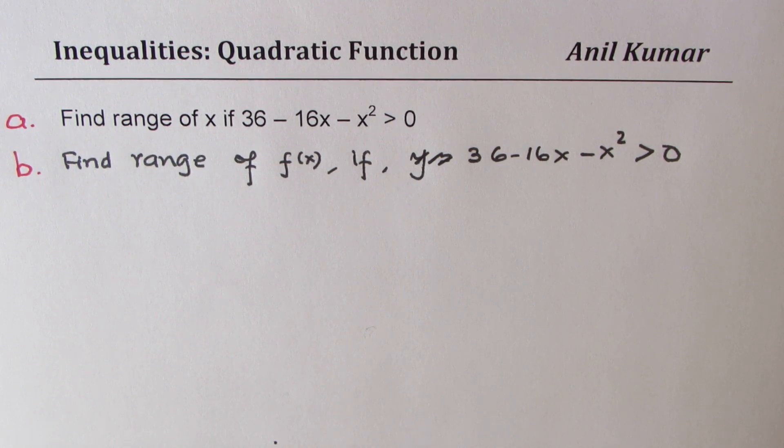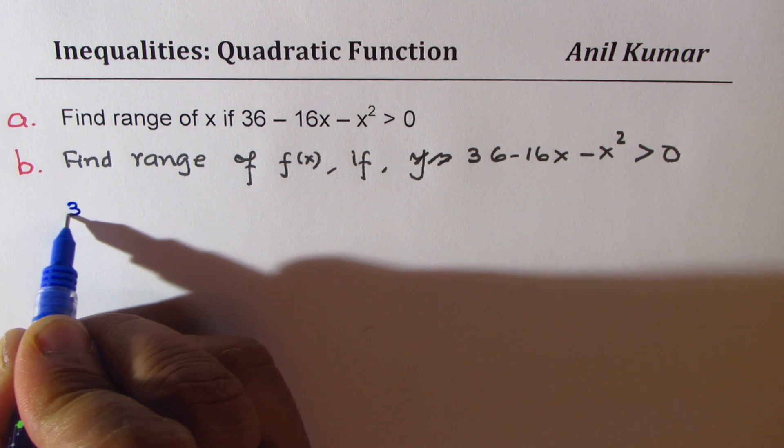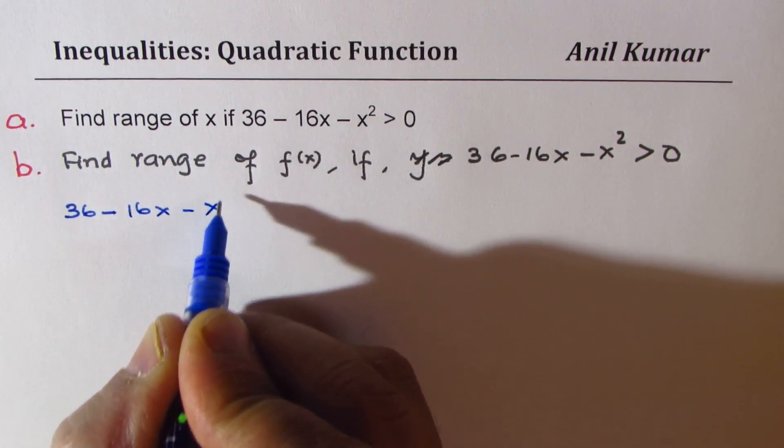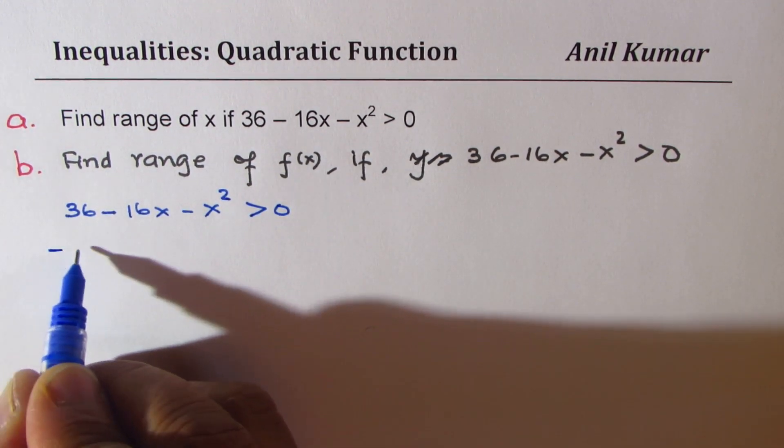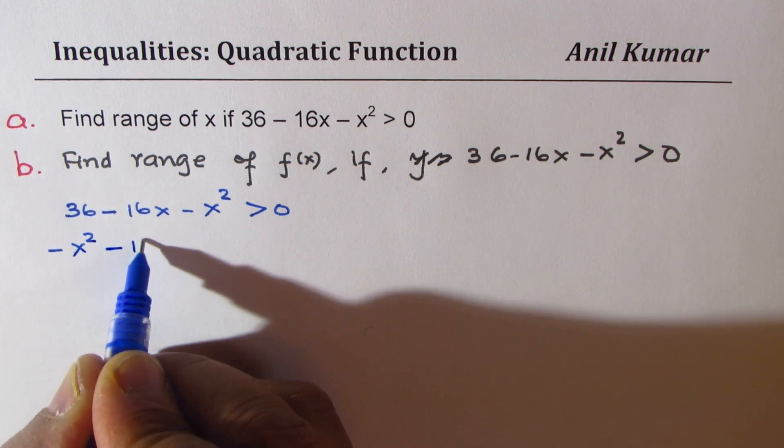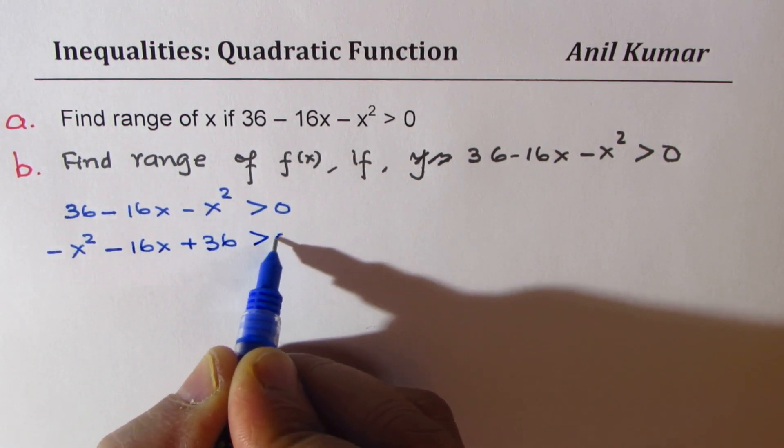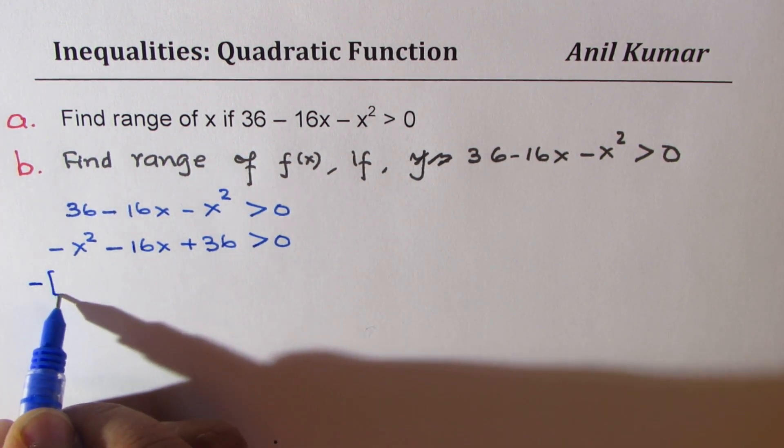Let's begin with the solution. The equation before us is 36 minus 16x minus x squared is greater than 0. Let's rearrange. We get minus x squared minus 16x plus 36 is greater than 0. Let's take this minus outside as common.